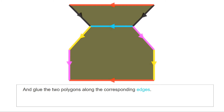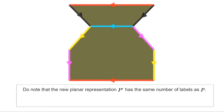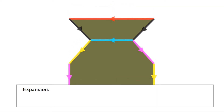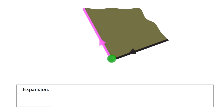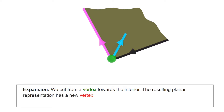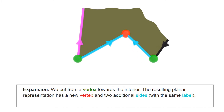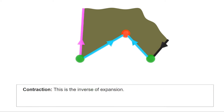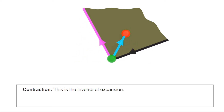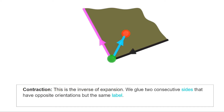The cutting step is followed by a pasting step in which we pick another color and glue the corresponding edges. The new planar representation has as many edges as the original. The next surgery method is called expansion: we choose a vertex and make a cut inwards to a new vertex, introducing a new edge, so the new planar representation has two more sides. The last surgery construction is the inverse process, called contraction: if two consecutive sides have the same color and opposite orientations, we can glue them together.